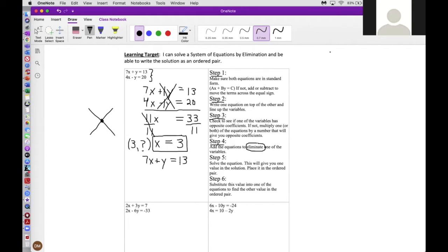7X plus Y equals 13, and now I'm going to plug in that solution that I got using my method of elimination. I've already done step 5, solving and getting one value in the solution to place in the ordered pair, which I've done up here.